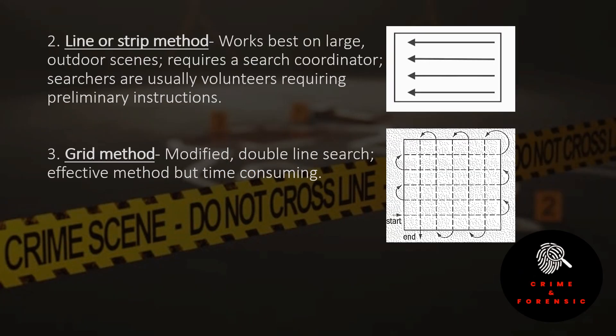Next is the line or strip method, which works best on large outdoor scenes. A square-shaped area is divided into parallel strips or lanes with one searcher per lane. Each searcher slowly walks from one end to the other through the middle of the lane, visually searching the full width of their lane. This method requires a search coordinator and searchers — usually volunteers — given preliminary instructions.